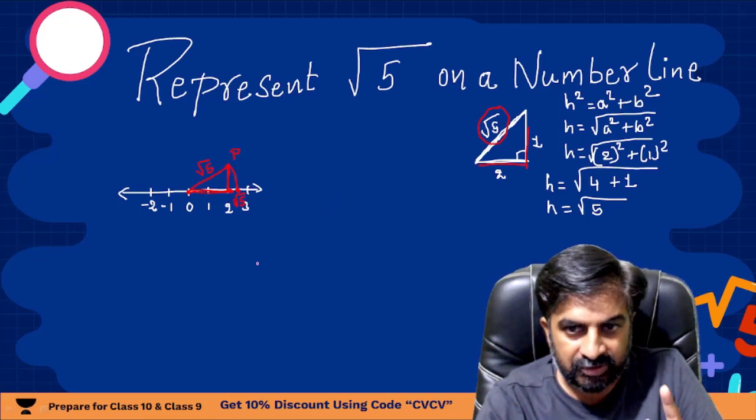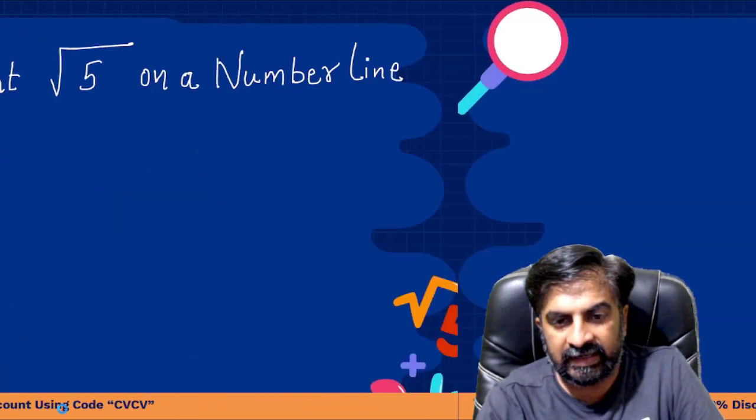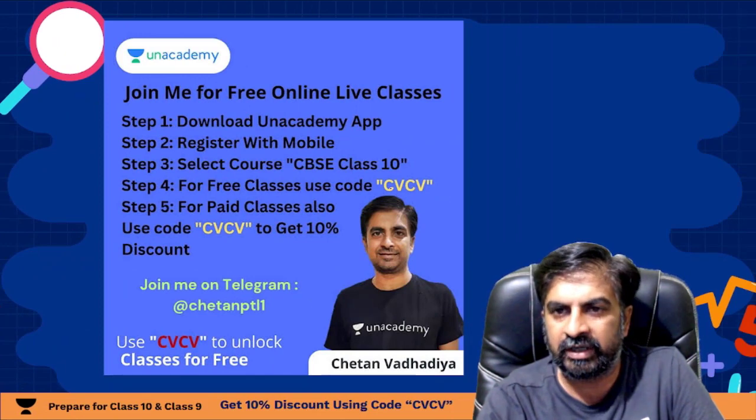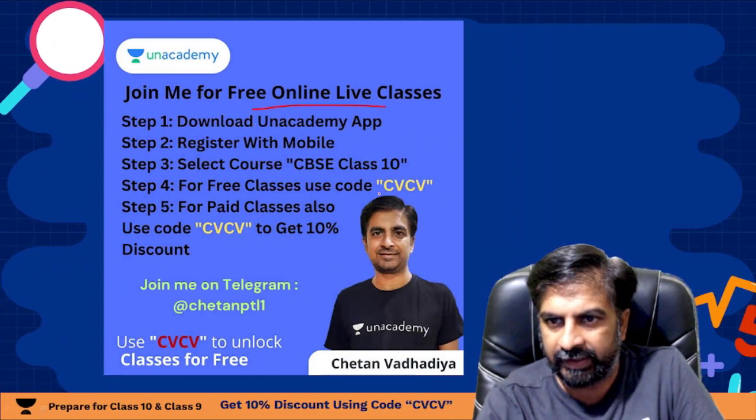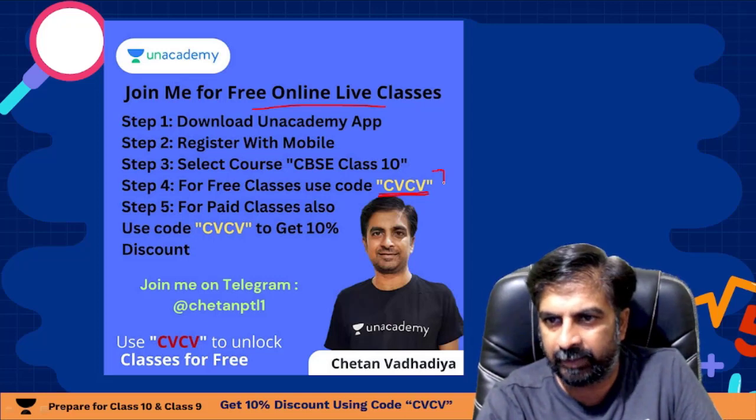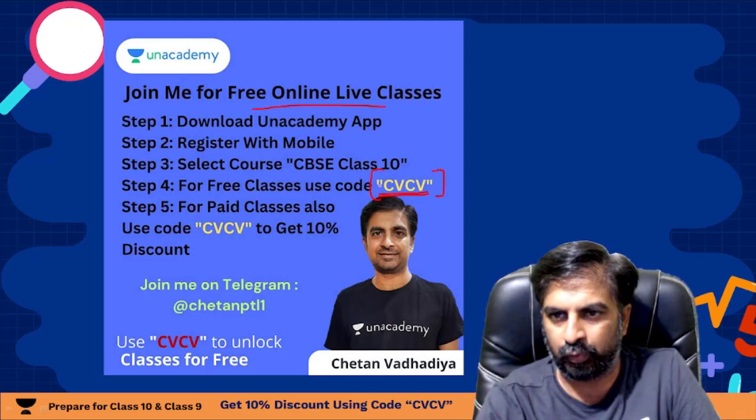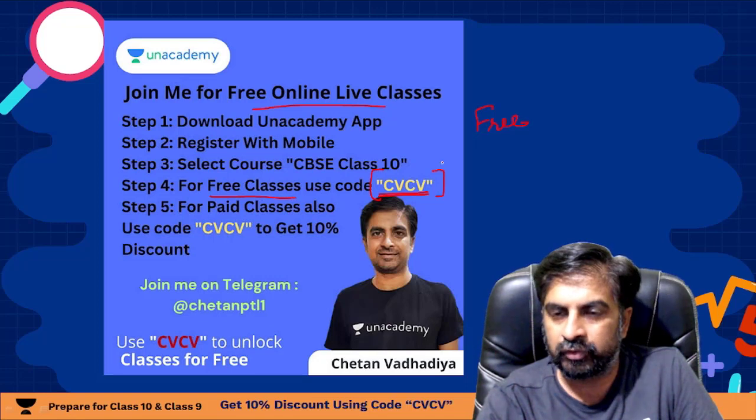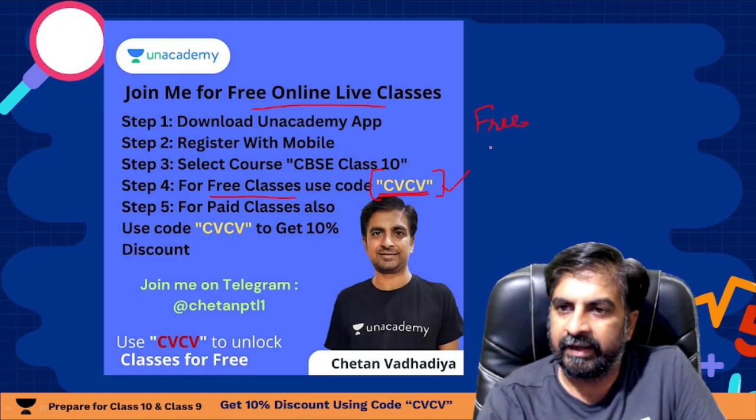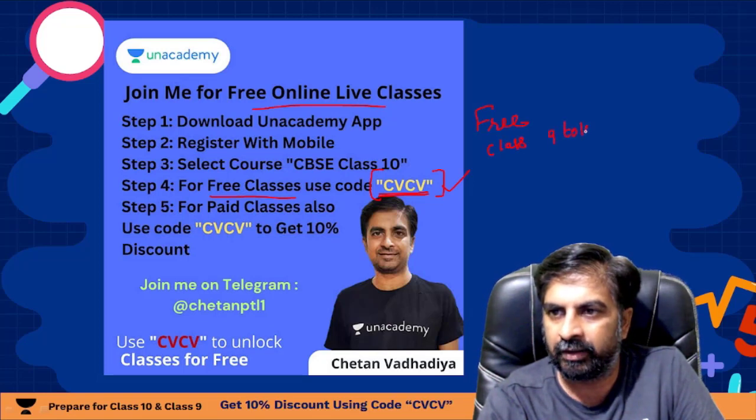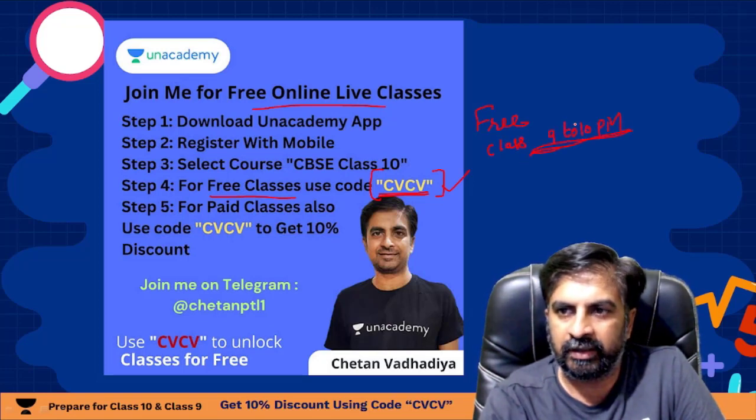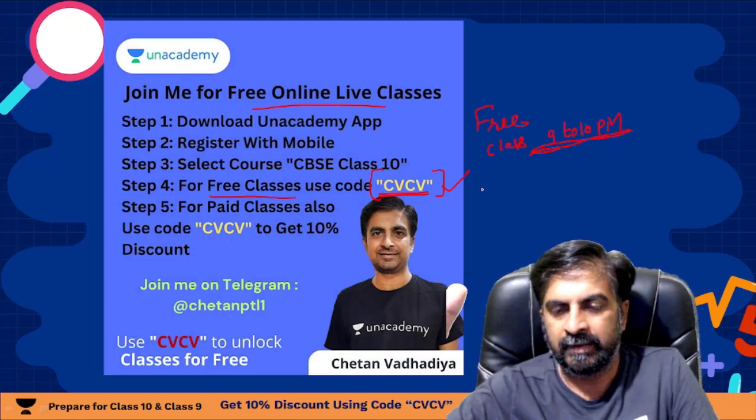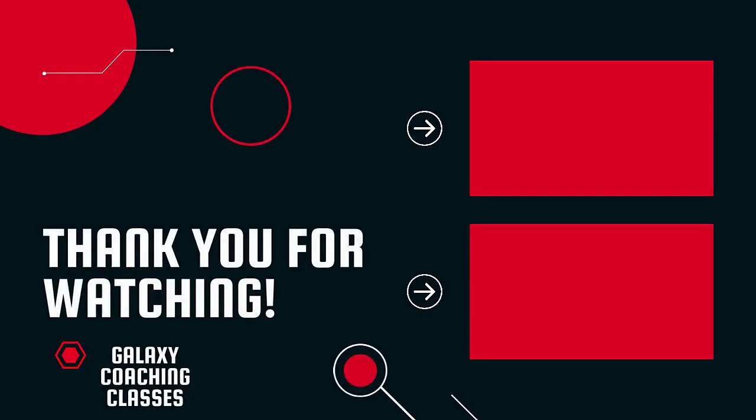So this way easily you can represent root 5 on a number line. Thank you so much for watching my video. If you like it please subscribe to my channel. I am also taking free classes on Unacademy app. You can join me, just you need to download Unacademy app, register with my code or with your mobile number, and after that use reference code CVCP. You can join my free classes. For class 9, my lecture is between 9 to 10 PM at night. All the students of India, USA, Canada, UK, Australia and other countries can join me for more videos.